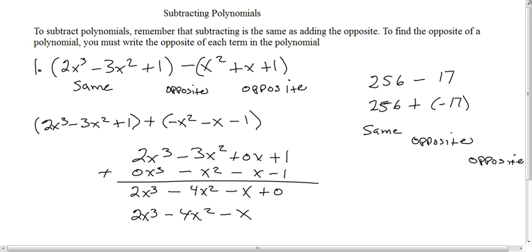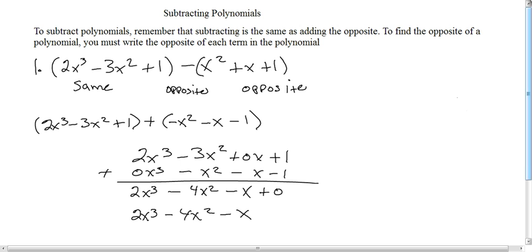That's how we do this if we were doing this vertically. Let's quickly take a look at how we would work the same problem if we did so horizontally. The exact same problem. The only thing we do here is since we already have this problem already constructed, same opposite opposite, let's just go ahead and regroup. We will look at our 2x³, which stays by itself.